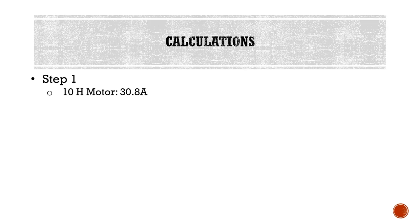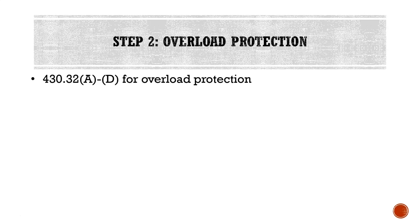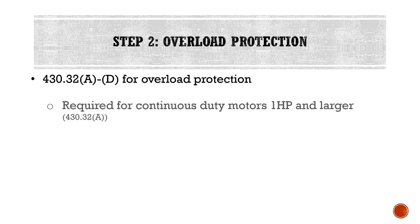For step one, we determined that our 10-horsepower motor has an FLC of 30.8 amps and our 15-horsepower motor has an FLC of 46.2 amps. That leads us into step two, which is our overload protection. We're going to be looking at 430.32 A through D for overload protection.